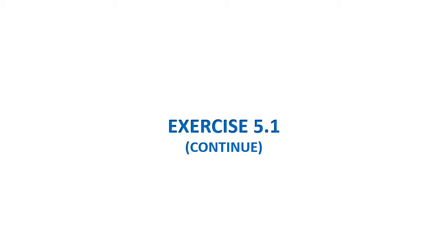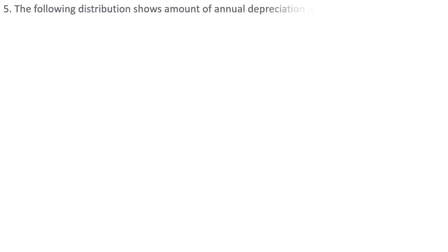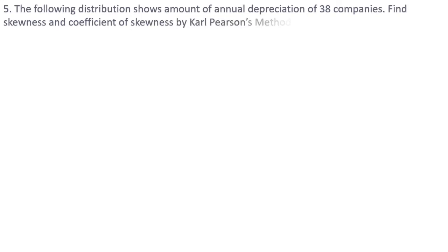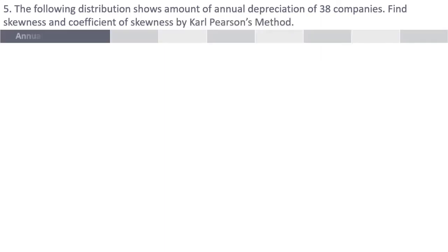Let us start with question number 5. The following distribution shows the amount of annual depreciation of 38 companies. We have to find skewness and coefficient of skewness by Carl Pearson's method. The data given is annual depreciation: 7, 9, 10, 11 to 20, 21 to 24, 25 to 36. Looking at this data we can obviously see that this is a mixed frequency distribution — the first three values are discrete while the remaining three values are continuous.